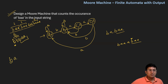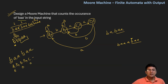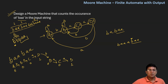Let's take the input BAABAA and see what the output will be in this Moore machine. I start at state A which produces output 0. On B I move to state B — output 0. On 'a' I move to state C — output 0. On 'a' I move to state D — output 1. Then on B I move back to state B — output 0. On 'a' I move to C — output 0. On 'a' I move to D — output 1. We can see two 1's in the output, so I have counted the number of BAA occurrences in the input string.